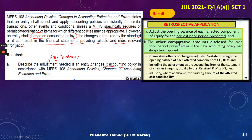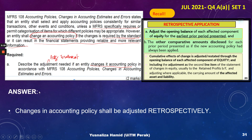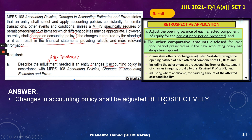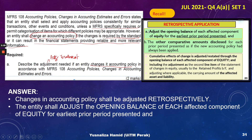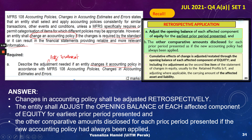Recall from lecture that retrospective application is going to be applied. We're going to write this short and sweet for just two marks. First, changes in accounting policy shall be adjusted retrospectively. Second, you need to adjust the opening balance of each affected equity component for the earliest prior period presented. Third, the other comparative amounts are restated for each prior period presented as if the new accounting policy had always been applied. So there should also be comparative amounts between last year and this year.